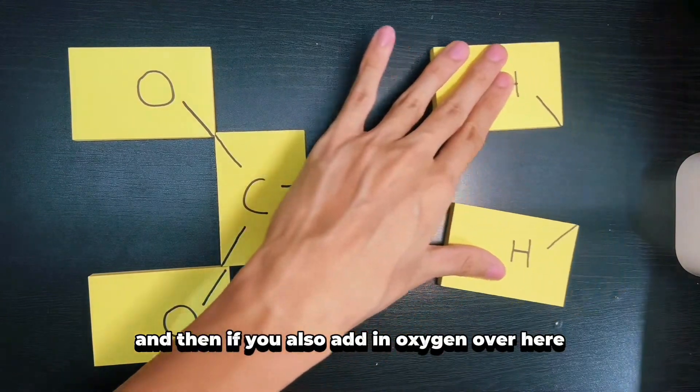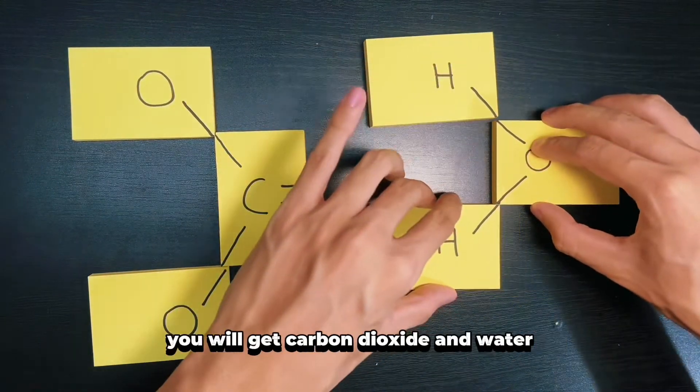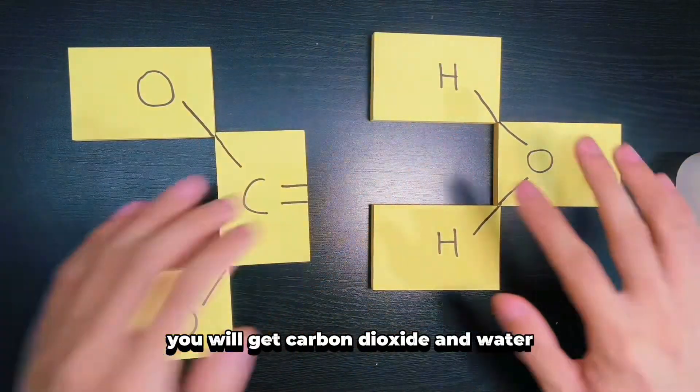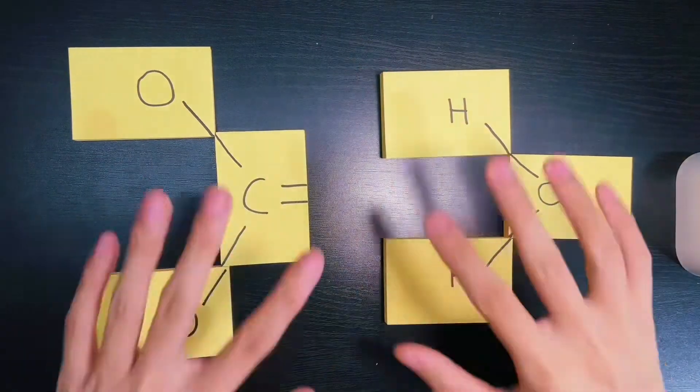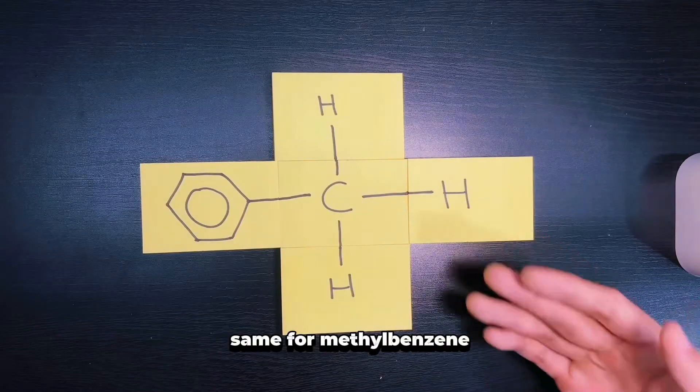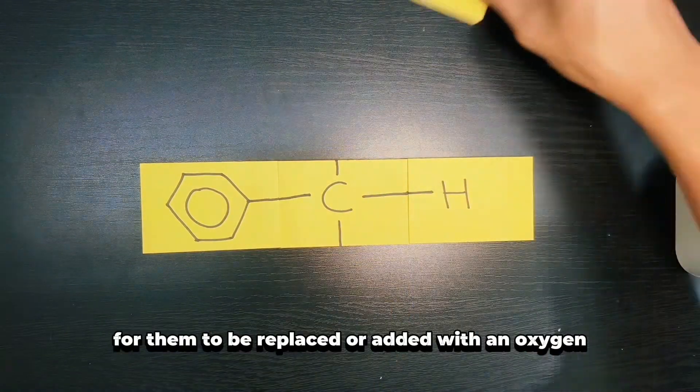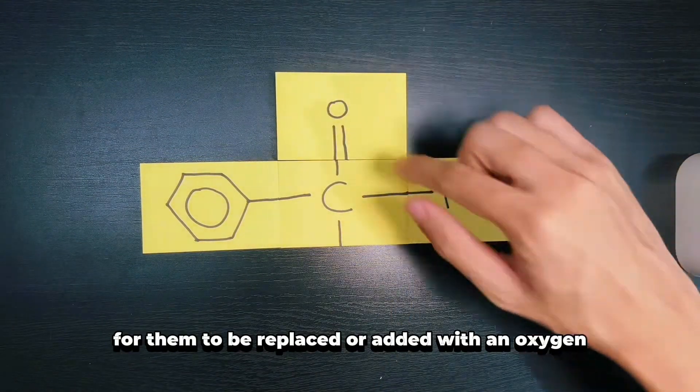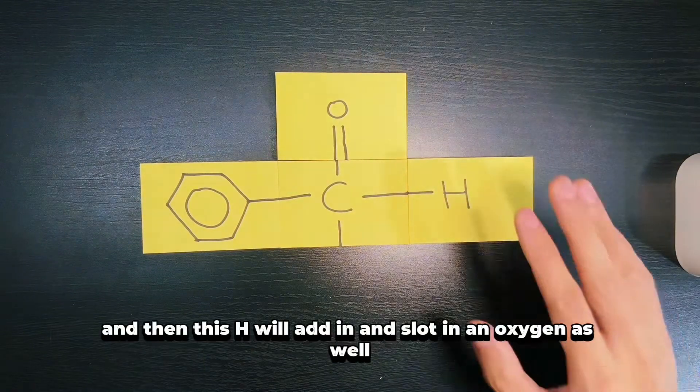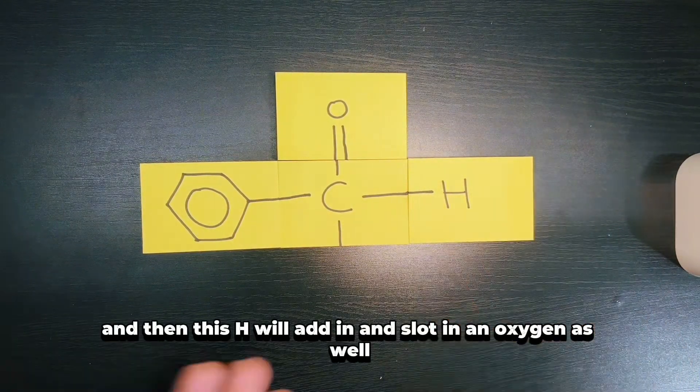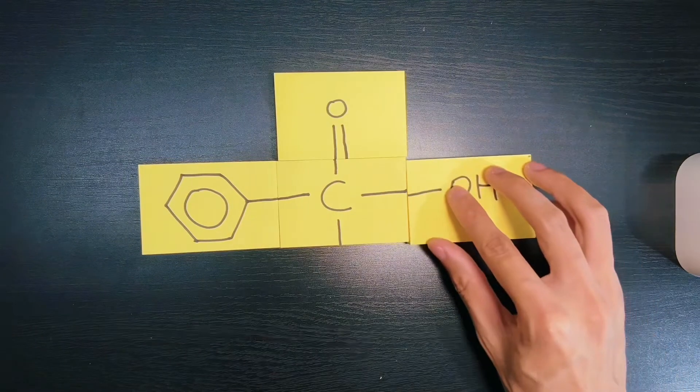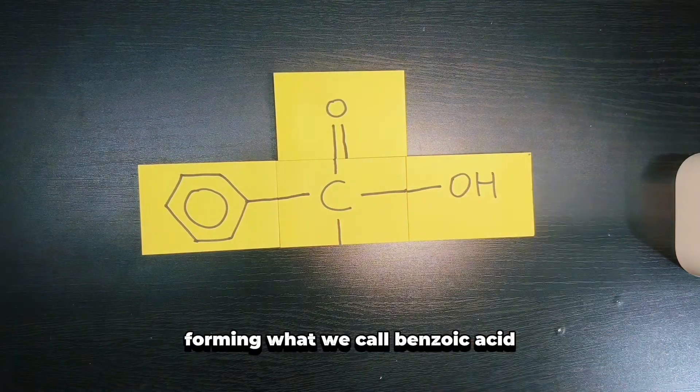For methyl benzene, oxidation means removing these two hydrogen atoms to be replaced or added with an oxygen over here. Then this H will add in and slot in an oxygen as well, forming what we call benzoic acid.